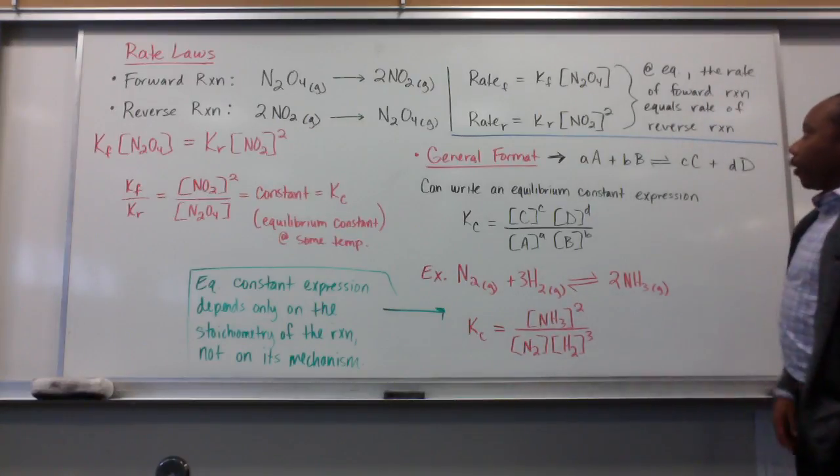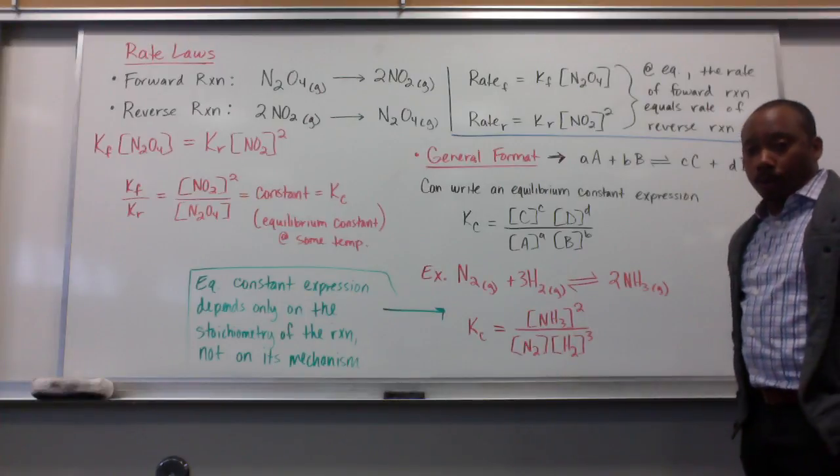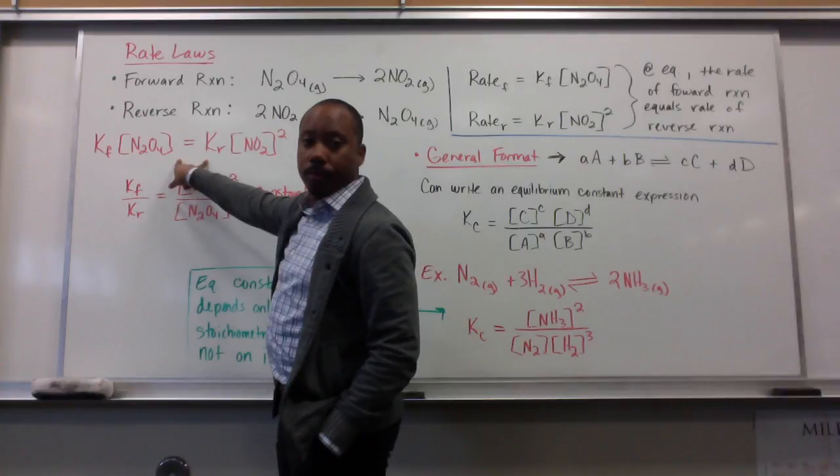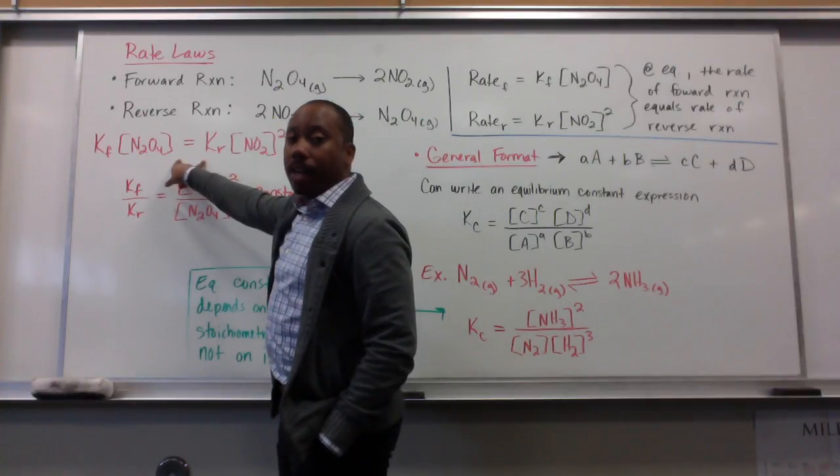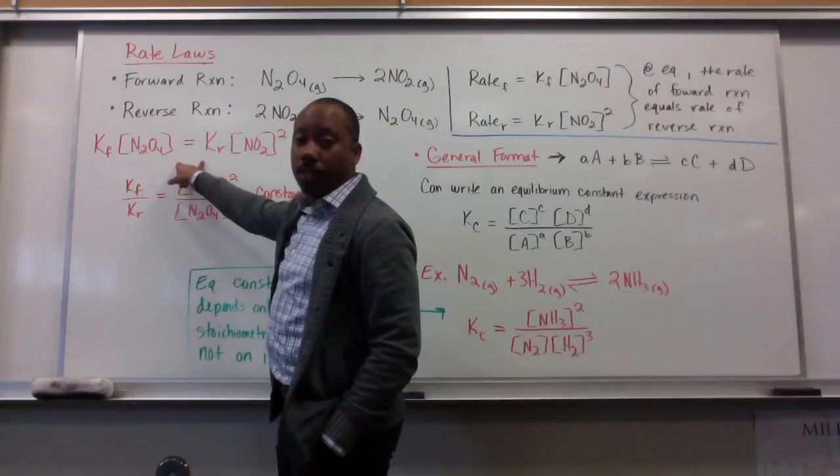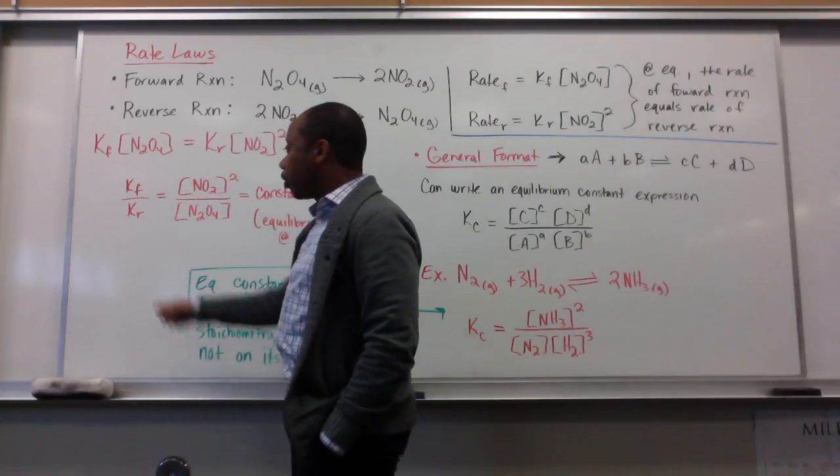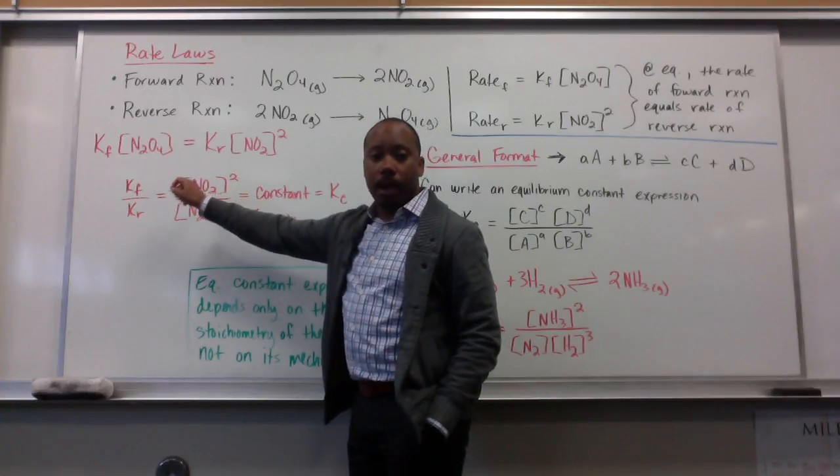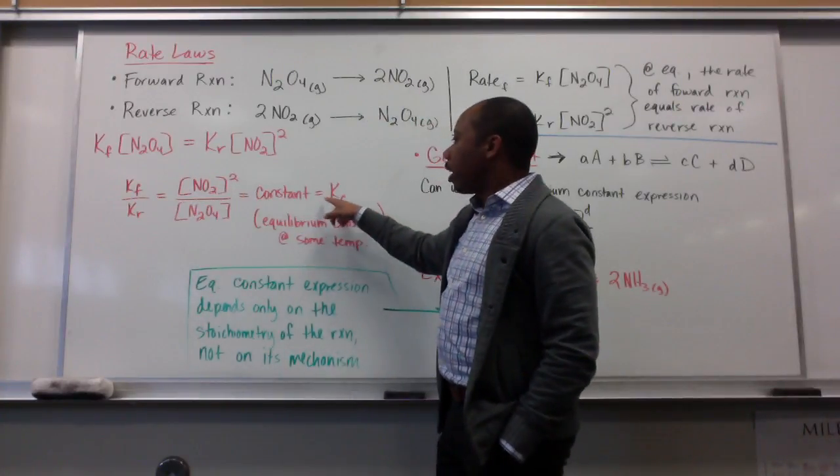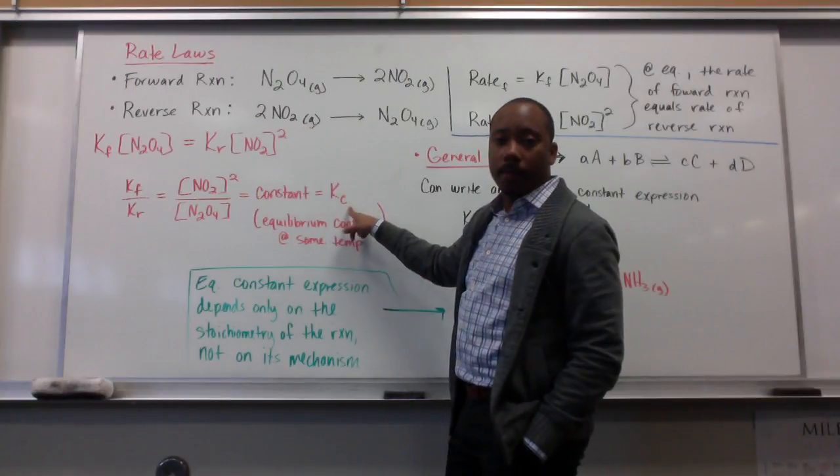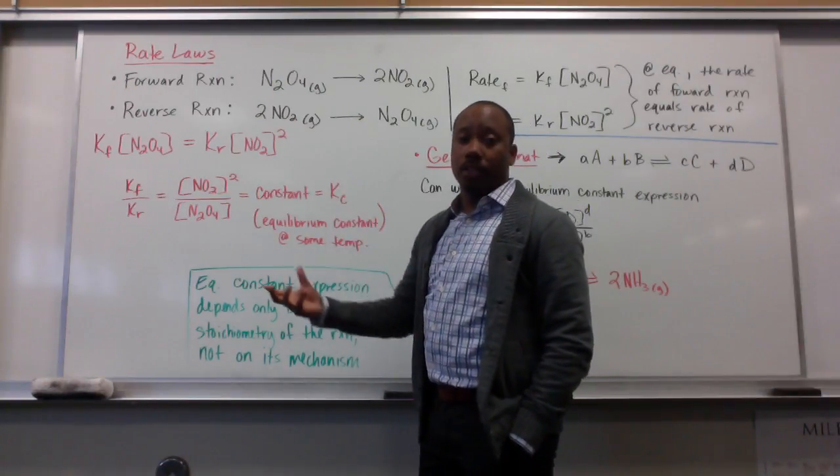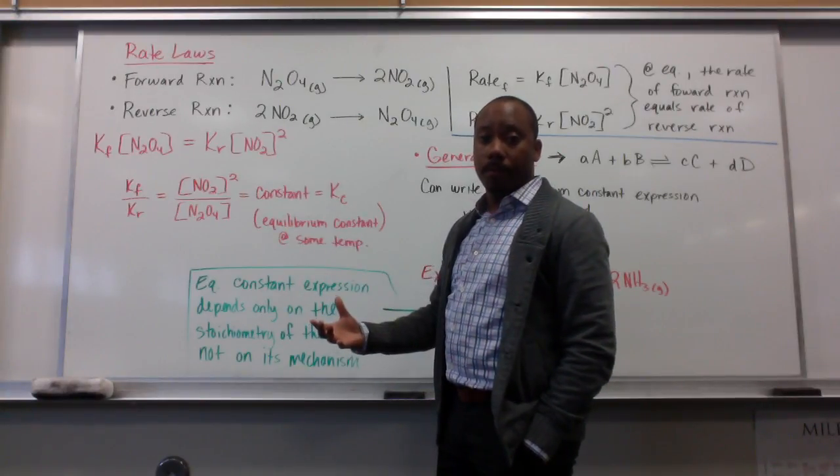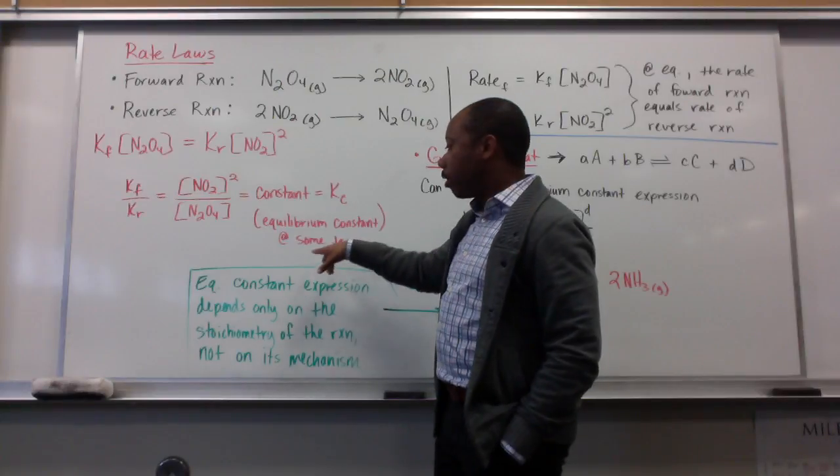At equilibrium, the rate of the forward reaction equals the rate of the reverse reaction. So, I can set these two equal to one another, as I did here. If I isolate my concentrations and my equilibrium constants and get them on either side of the equation, I get this. Dividing this, K sub F divided by K sub R equals a constant called K sub C. This C just stands for that, stands for concentration. We're talking about the concentrations of different substances at equilibrium. This is at some temperature.